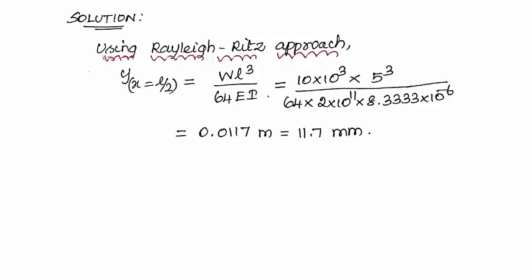We know the exact solution for a simply supported beam with a centrally acting point load is WL³ divided by 48EI.